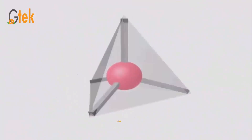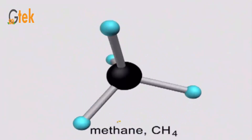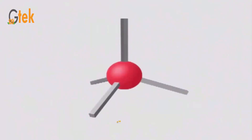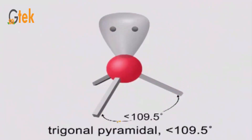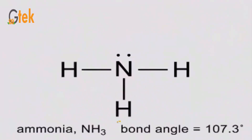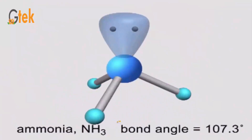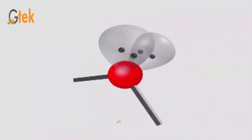Now we will talk about tetrahedral arrangement. Four elements are connected with a bond angle of 109.5 degrees — that's tetrahedral. The typical example is methane, CH4. There is also a special case: trigonal pyramidal, which is V-shaped and less than 109.5 degrees. The example is ammonia, NH3, with a bond angle of 107.3 degrees.